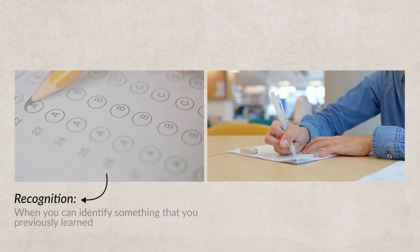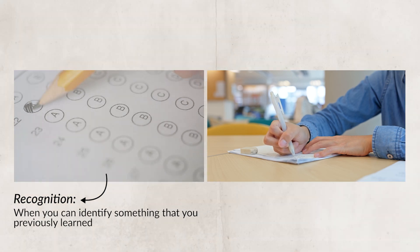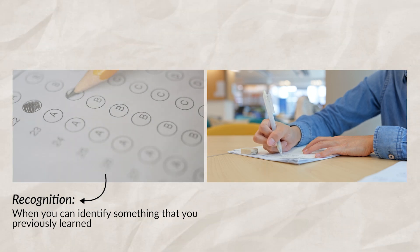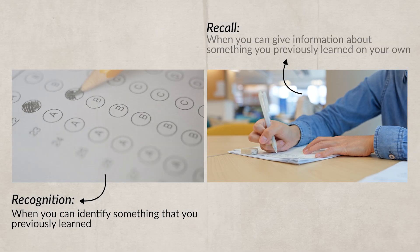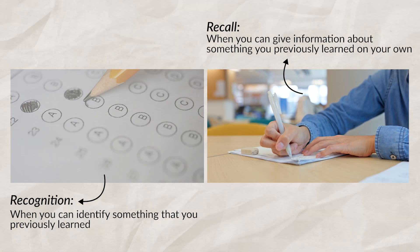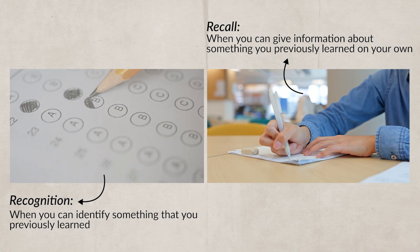Recognition is when you can identify something that you previously learned. For example, when you're taking a multiple choice test, you're using recognition to retrieve past information you learned. With recognition, you don't have to remember every aspect of the concept — you merely have to identify it, since the multiple choice test gives you answers to pick from and you just have to pick the correct answer.